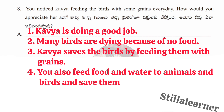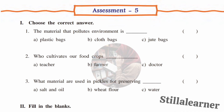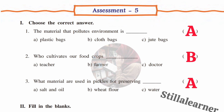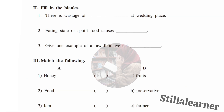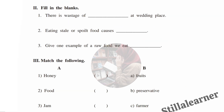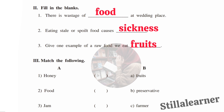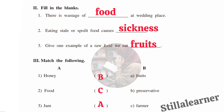Now we'll cover Assessment 5 answers. Roman I — choose the correct answers: the material that pollutes the environment is plastic bags (A); who cultivates our food crop — farmer (B); what materials are used in pickles for preserving — salt and oil (A). Roman II — fill in the blanks: there is wastage of food at wedding places; eating stale or spoiled food causes sickness; one example of raw food is fruits.